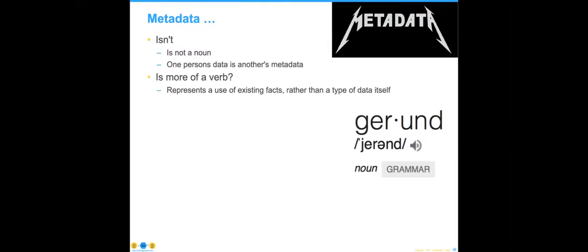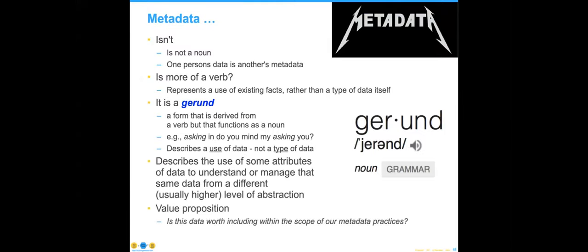You're all wondering: what is a gerund? A gerund is a verb that functions as a noun. It really isn't a noun. What happens is if you look around for metadata to store, people start pointing to things and say 'is that metadata?' — and that's the last thing you want, because it confuses things. The answer is: any piece of data can also be used as metadata, depending on the circumstances. Instead of asking 'is that metadata?', you should say: is this data worth including in the scope of our metadata practices?